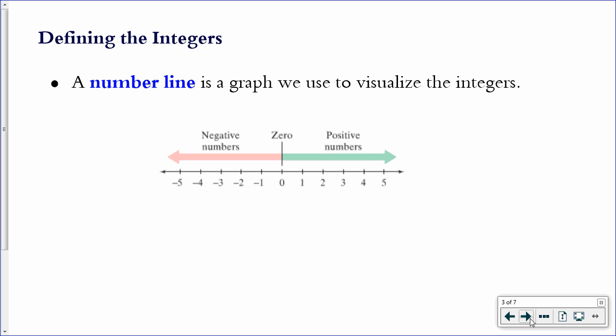And zero is in the middle, positives to the right, negatives to the left. When we do get into graphing with the x and y axis, it's basically the x axis, right, with no y axis going through it.